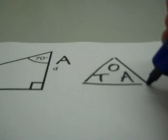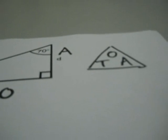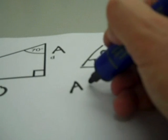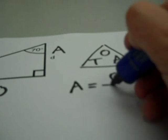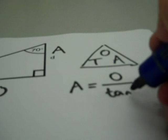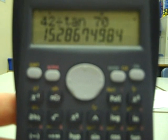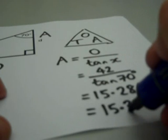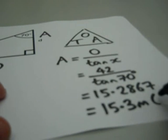In our second example, we have the opposite and the adjacent, so we need TOA. The unknown is the adjacent again, but this time when we cover up A, we have to divide. The formula is A equals O divided by tan x, and substituting, we have 42 divided by tan 70°, which is 15.2867. This rounds to 15.3 metres.